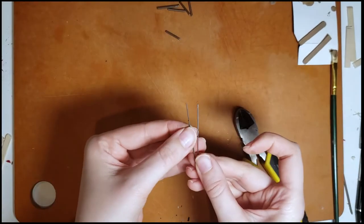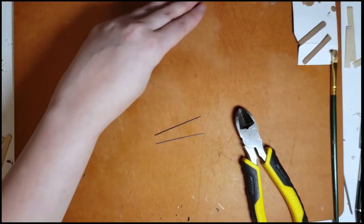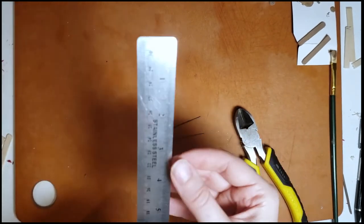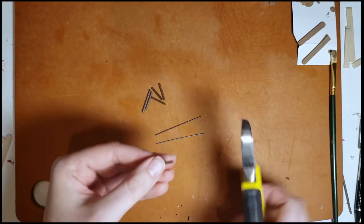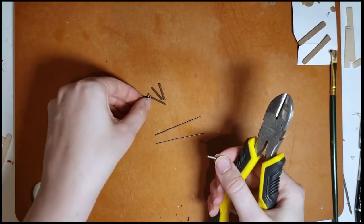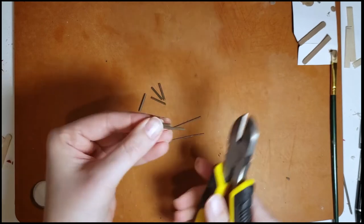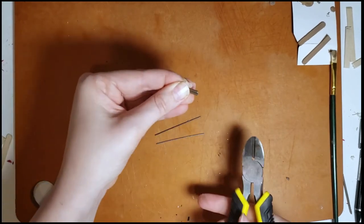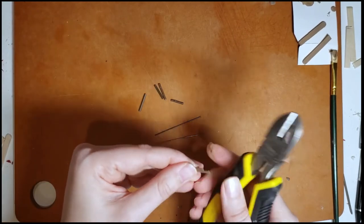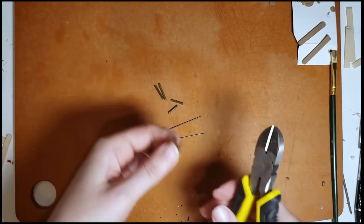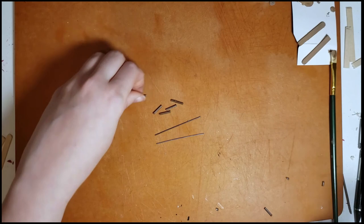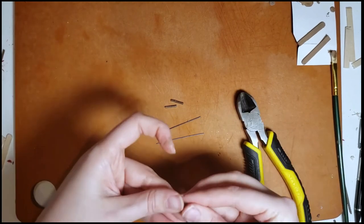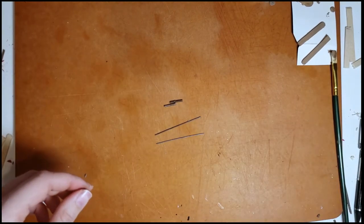Now we're going to take those casings that we just cut off of the wire and you're going to take them and measure them at a half inch. You can trim them with the wire cutters or scissors. And we're actually going to take those and glue them back on to the wire and these are going to become the handles for our ski poles.